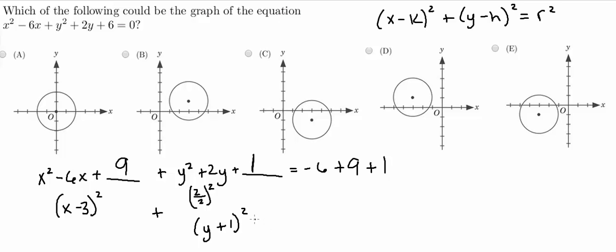And all of this is going to be equal to negative 6 plus basically plus 10. 9 plus 1 is 10. So 10 minus 6 is 4.